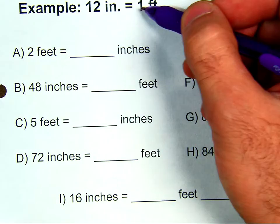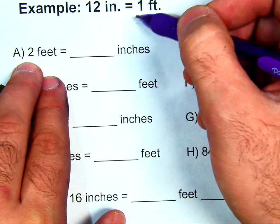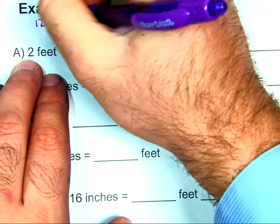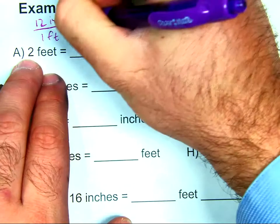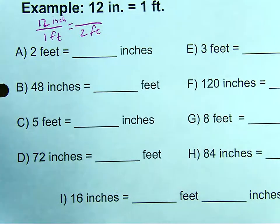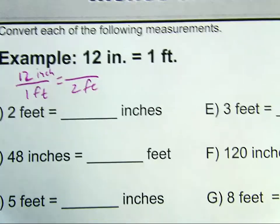If I know there's 12 inches in 1 foot, and I have 2 feet, that's going to be 12 inches to 1 foot equals some amount of inches for 2 feet. In order to do that, I'm going to do my ratios.